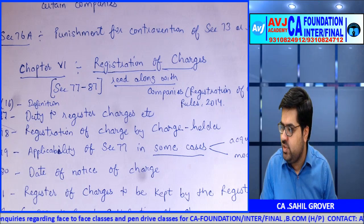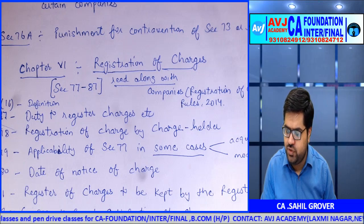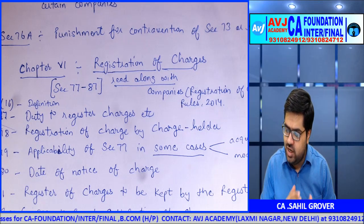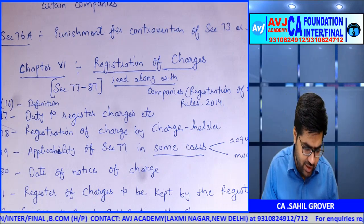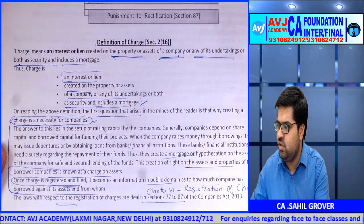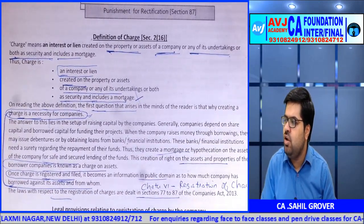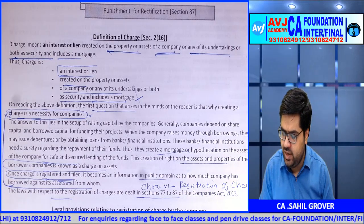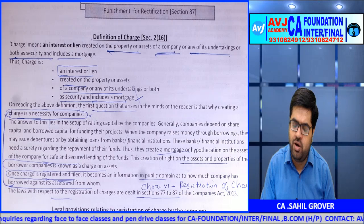Before I start with Section 77, we need to first go by the definition of charges. Charges have been defined under Section 2(16) of Companies Act 2013. How do you define charges? Charges include any kind of interest or any kind of lien which is created on the property or assets of the company, or any of its undertaking, or both as security, and includes a mortgage.